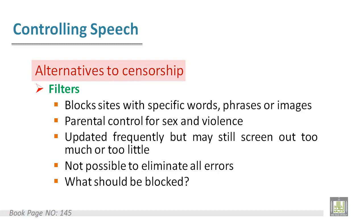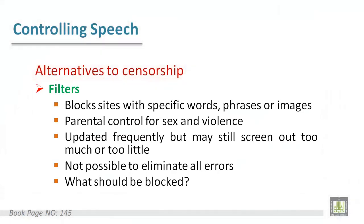Now let's move to alternatives to censorship. There are two main alternatives. The first one is filters. Filters block sites with specific words, phrases, or images and make it easy for parents to control the content their children may watch, especially for sex and violence. Filters are usually updated frequently but may still screen out too much or fail to eliminate all undesirable content.